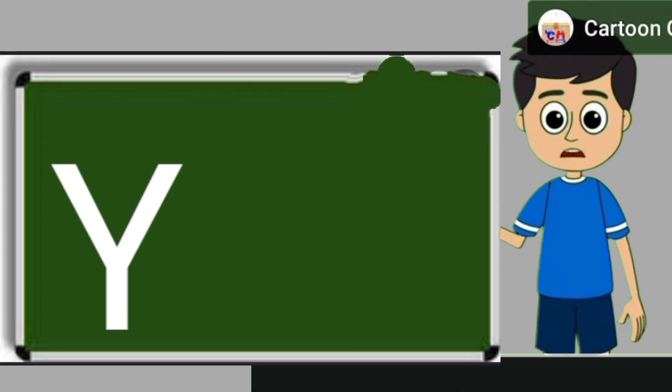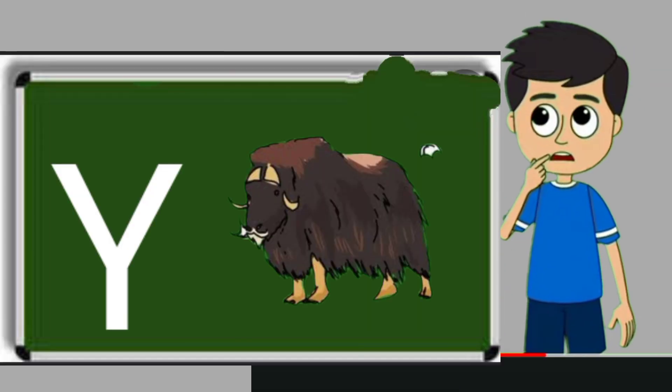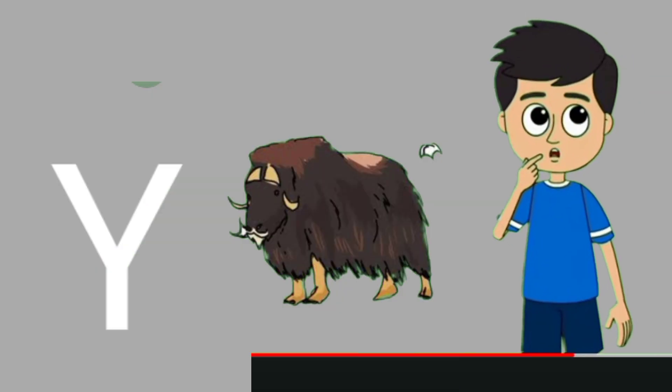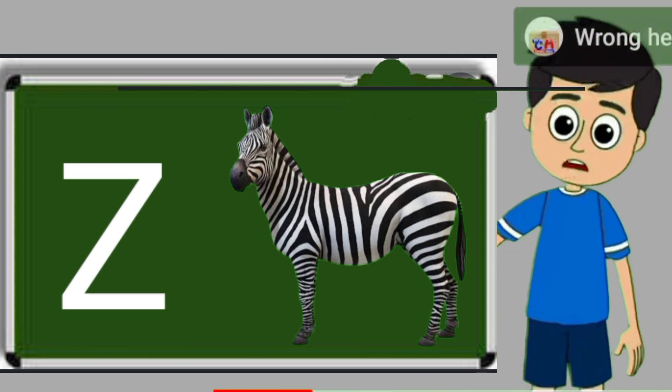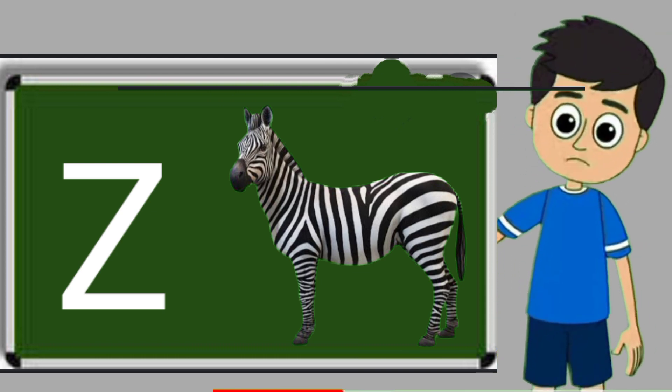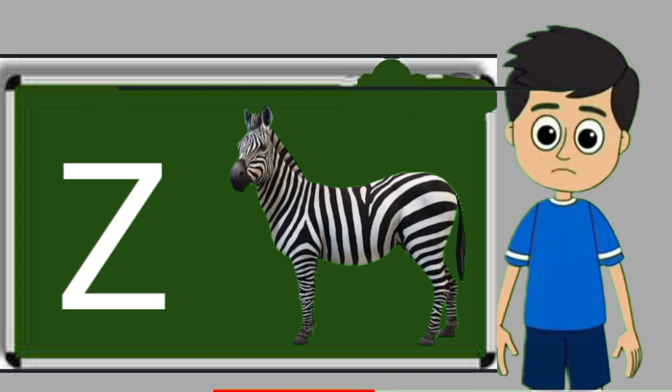Y for yak. Yak means bell. Z for zebra. Zebra means zebra.